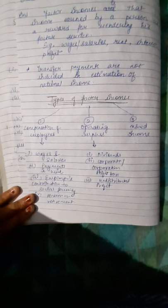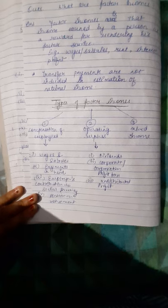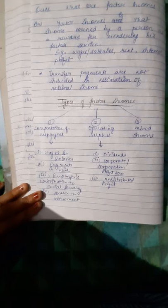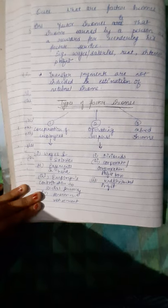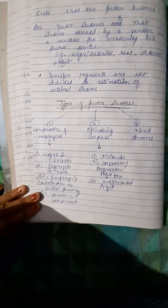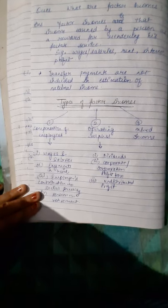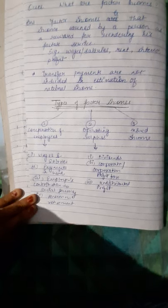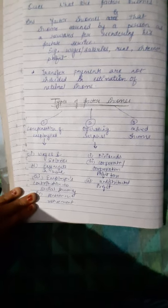Wages and salary refers to cash paid and transferred to the salary account of the employees by the employer. Payment in kind refers to benefits in kind — for example, rent-free accommodation provided to employees.